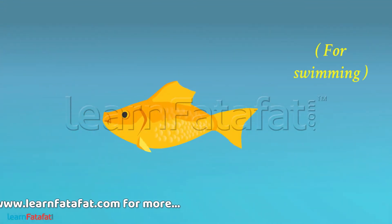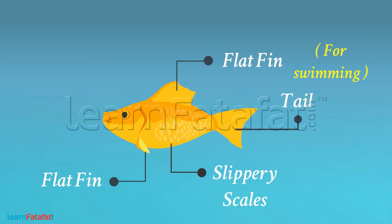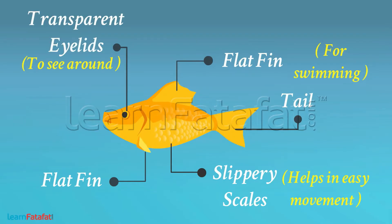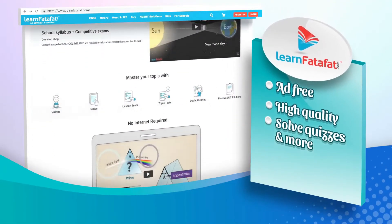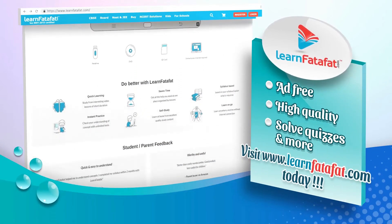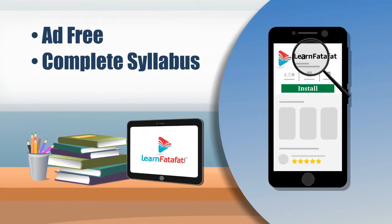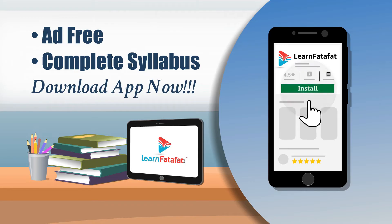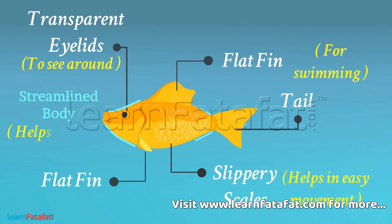For swimming, fish use their flat fins and tails. They have slippery scales on their bodies which helps in easy movement. To see around, they have transparent eyelids. They also have a body which tapers towards both ends — we call such a body a streamlined body. It helps them to swim faster.